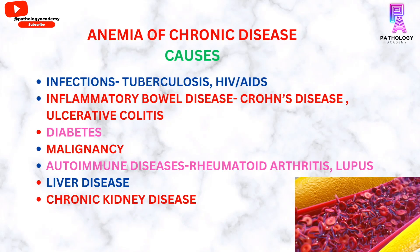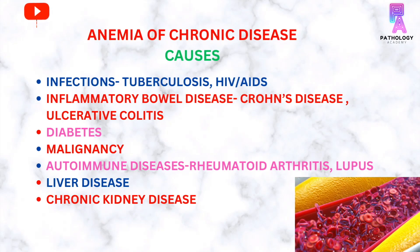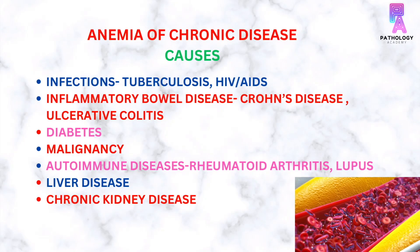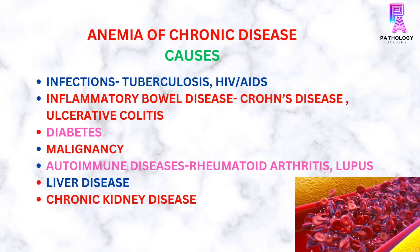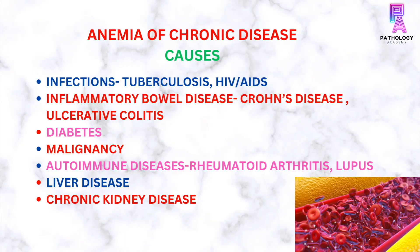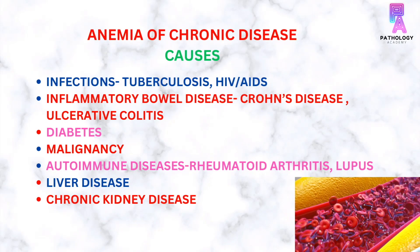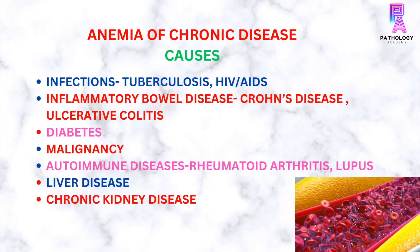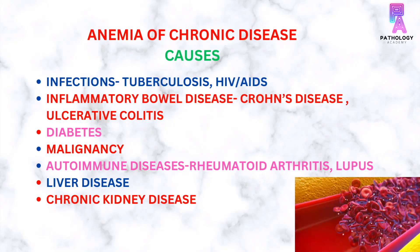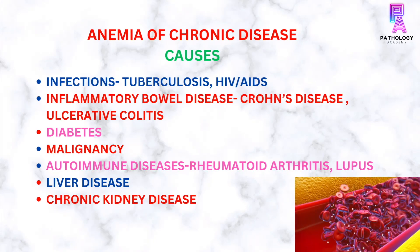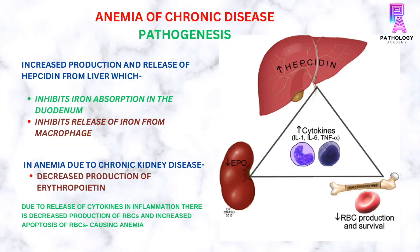The causes of anemia of chronic disease include infections like tuberculosis, HIV, AIDS, inflammatory bowel disease like Crohn's disease and ulcerative colitis, autoimmune disease like rheumatoid arthritis, lupus, diabetes, malignancy, liver disease, and chronic adenose disease.